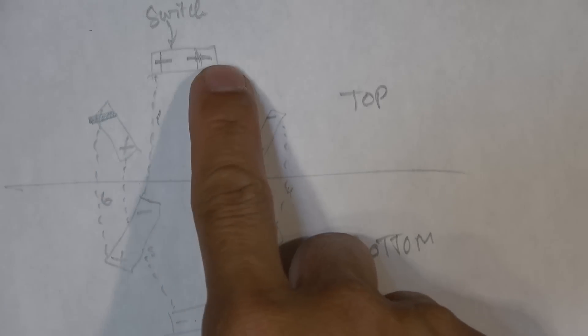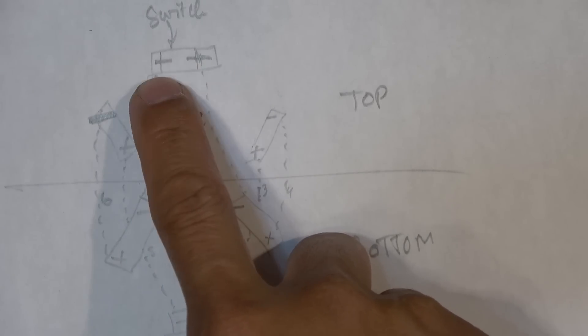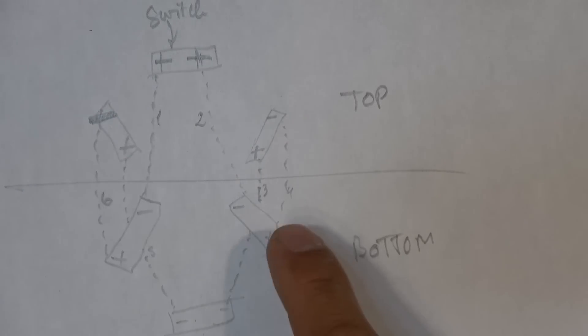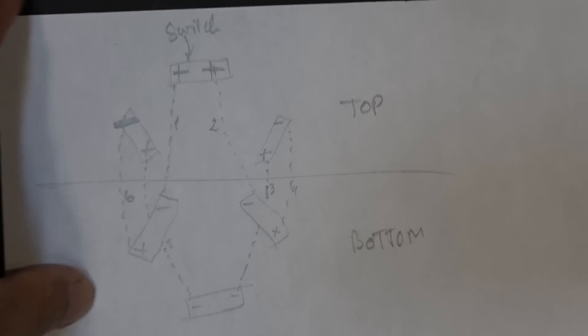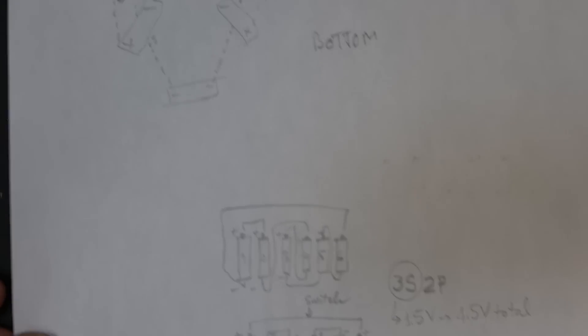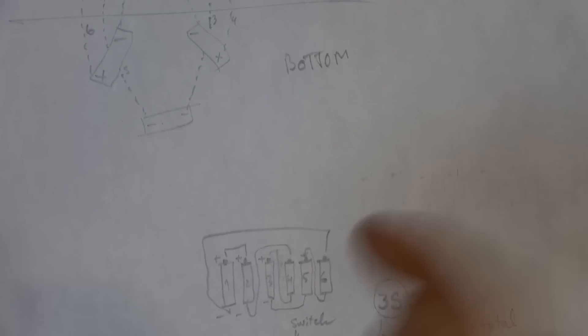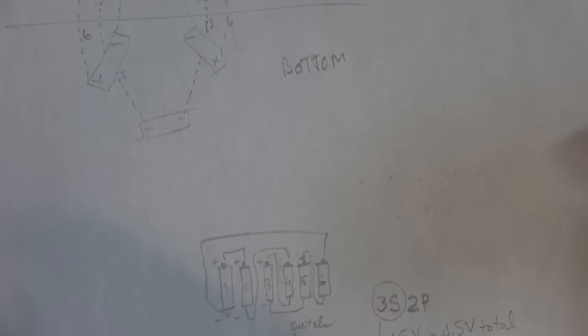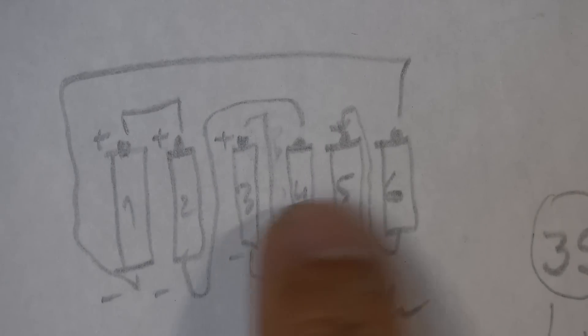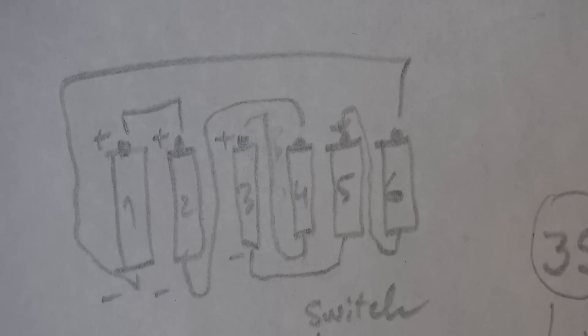And these are the terminals. So positive terminal here, two positive terminal here, negative, positive, negative, positive. And this is what it looks like on the bottom. And to make it easier to understand and draw the battery down here. So this is how the batteries are connected. Okay, so one, two, three, four, five, six batteries.